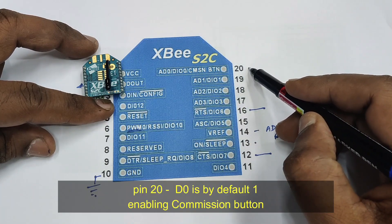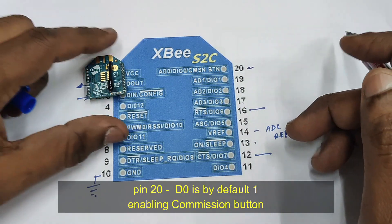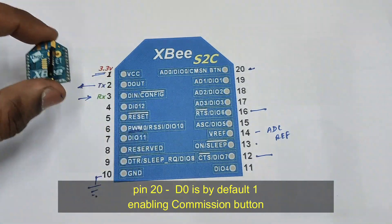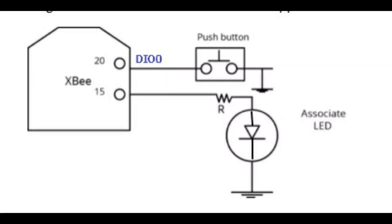Pin 20 is a special pin connecting a push button to ground which acts as a commissioning button. D0 is by default 1 and at pin 15 associate LED is there. So in future videos we will check out this commissioning pin.